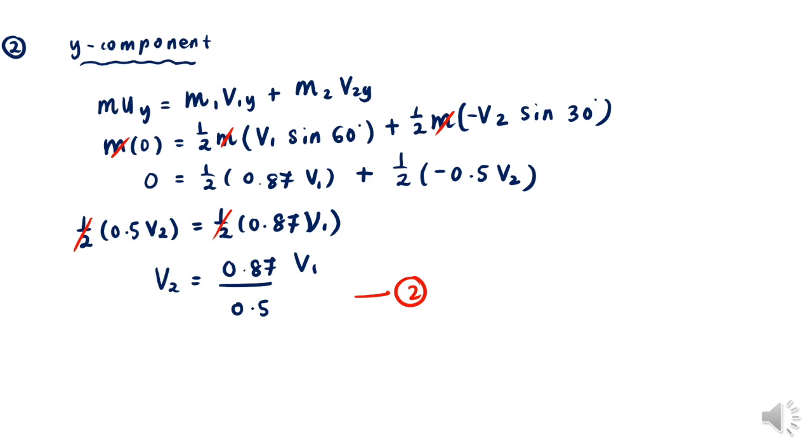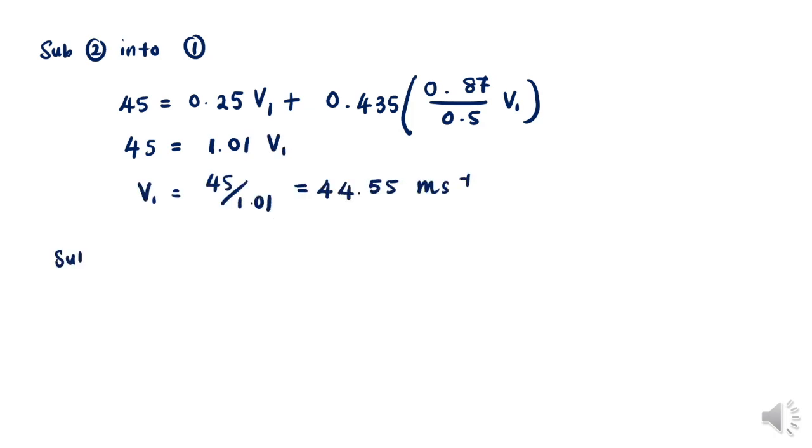Now we substitute equation 2 into equation 1. 45 equals 0.25 V1 plus 0.435 times V2, which is 0.87 divided by 0.5 times V1. Solve the equation and we get V1 equals 44.55 meters per second.